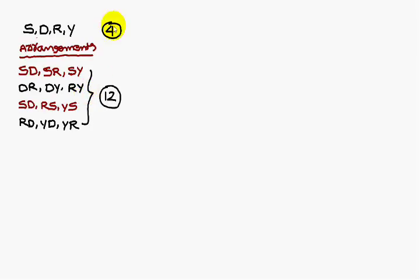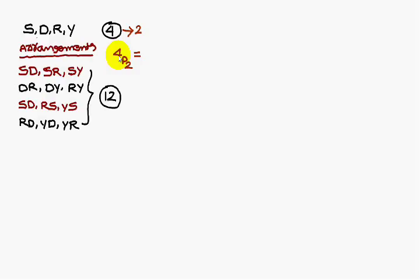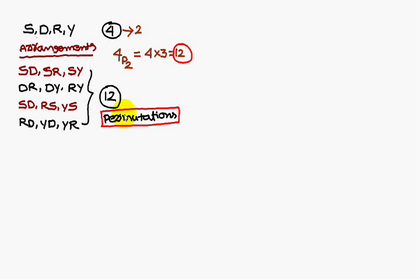From 4 taking 2, you are going to get 12 arrangements. That is nothing but 4P2 — this you call as permutations. To simplify 4P2, from 4 you write two numbers: 4 into 3, that is 12. So this is the concept of permutations.